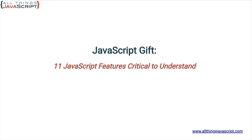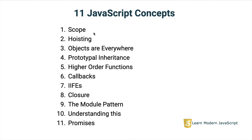Narrowing it to 11 may have been a mistake, I don't know, but I wanted to keep the course somewhat small. In any case, the 11 concepts are important to learn. Here are the topics that I cover in that course: I start out with scope and hoisting, and then I cover the concept that JavaScript is made up of objects — I think that's an important concept to understand. And then we deal with prototypal inheritance, higher order functions, callbacks, and immediately invoked function expressions.